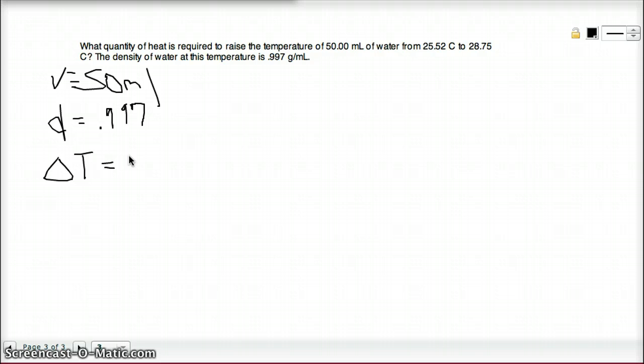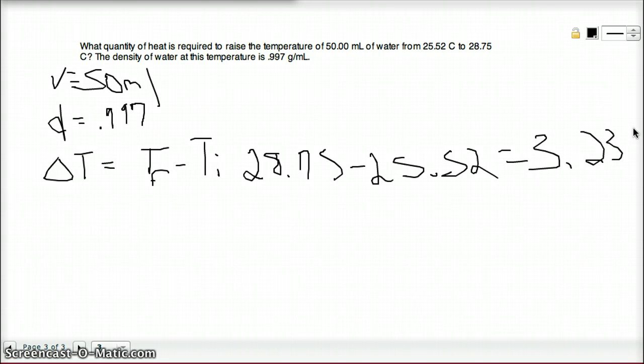So we want to raise the temperature, so we want it to be a positive temperature change. So it's always, for temperature change, temperature final minus temperature initial, which would be 28.75 minus 25.52, and that is equal to 3.23 Celsius.